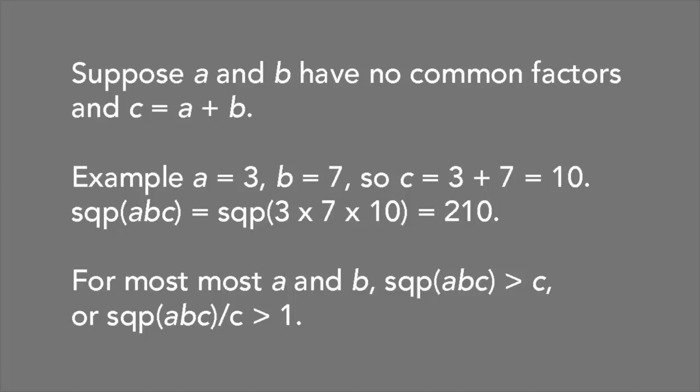For most choices of A and B, the square-free part of ABC is greater than C, as in the example above. In other words, the square-free part of ABC over C is greater than 1.